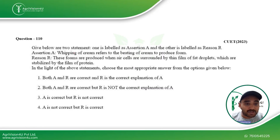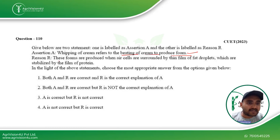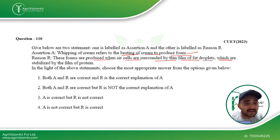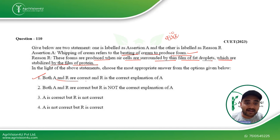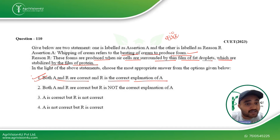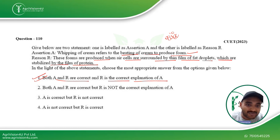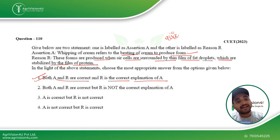Another assertion-reason question: whipping of cream refers to beating cream to produce foam — this is correct. The reason states these foams are produced when air cells are surrounded by a thin film of fat droplets stabilized by a film of protein. This correctly explains the assertion, so both assertion and reason are correct, and the reason is the correct explanation — Option 1 is the right answer. Please pause the video, read the question yourself, analyze the options, and then check the answer for better retention.